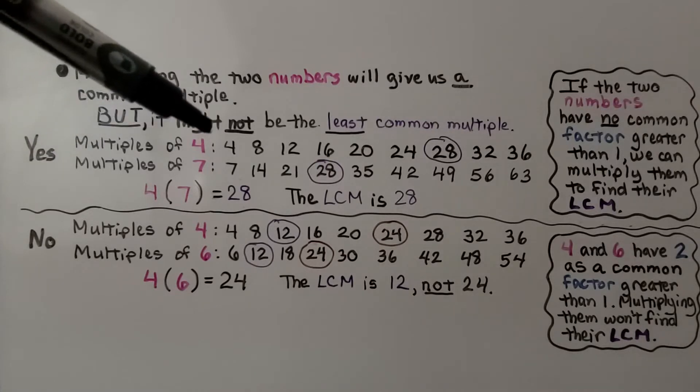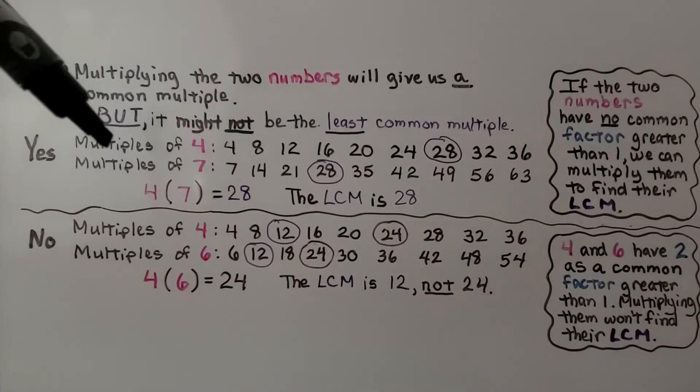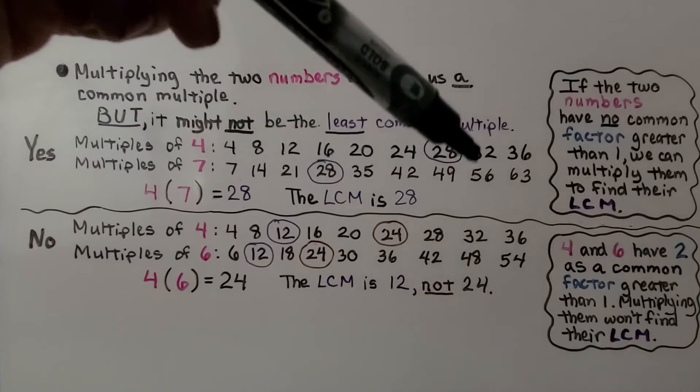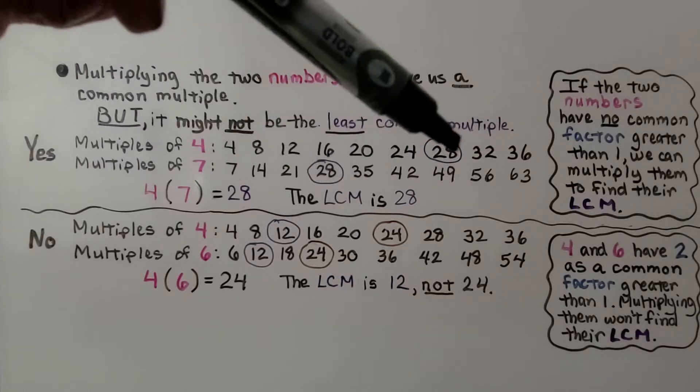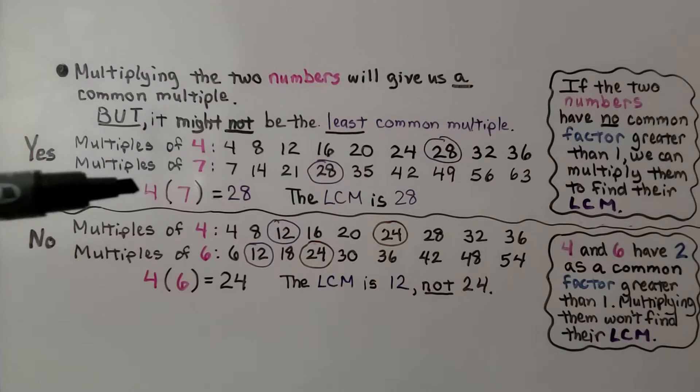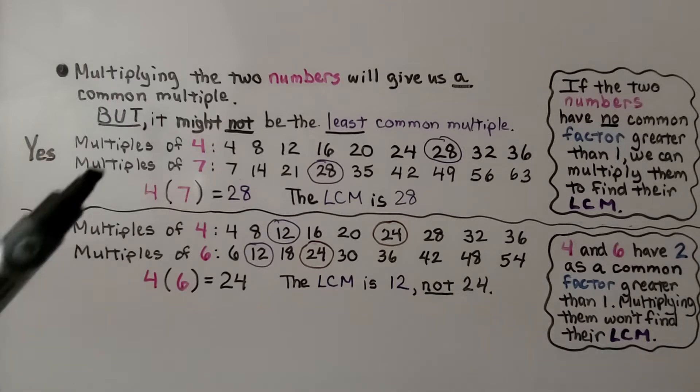For the multiples of 4, we list them all. We list all the multiples of 7, and see they have 28 in common. It's the least common multiple. And if we multiply 4 times 7, it is equal to 28. So its LCM is 28. It worked, multiplying them.